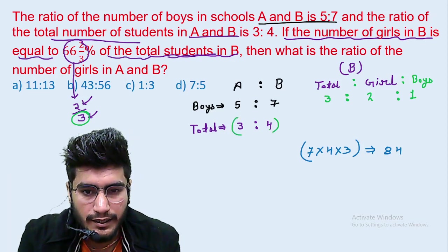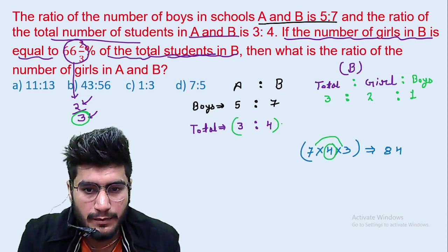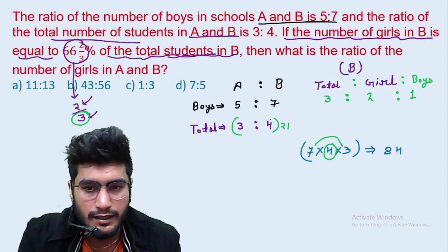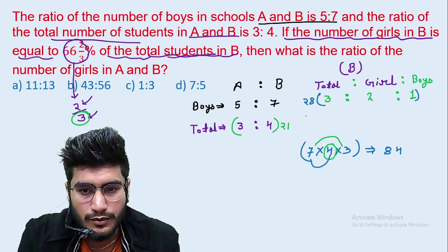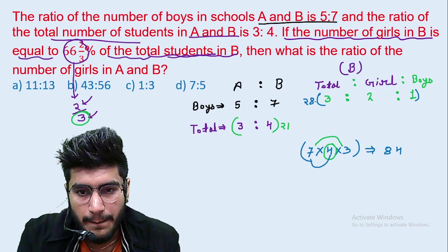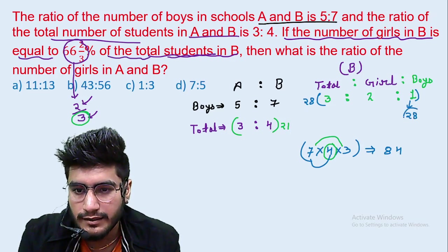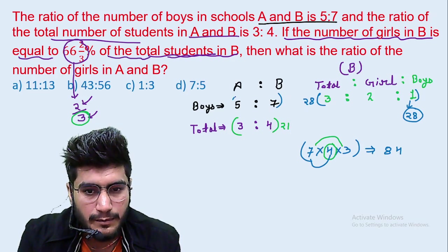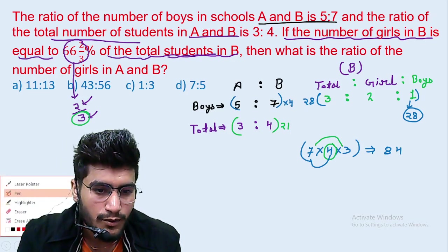Total we make 84, here is 21. If we multiply by 4, then we make 84. If we multiply by 3, if we make 28, then we make 84. Boys will be 28. Here we have the number of boys, how much is the number of boys? So we make 28. This is our ratio balance.